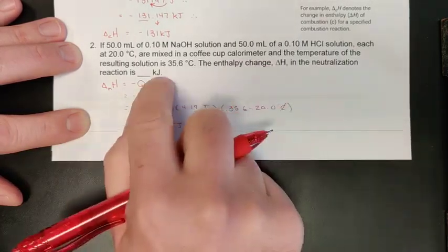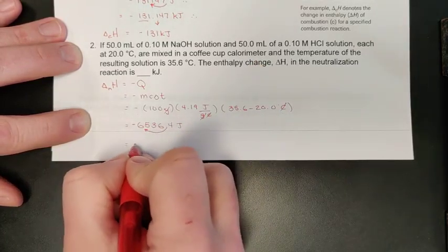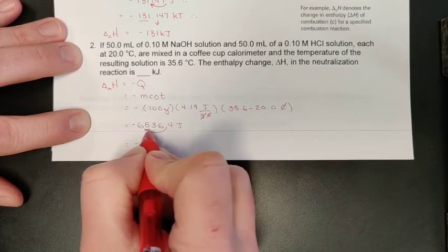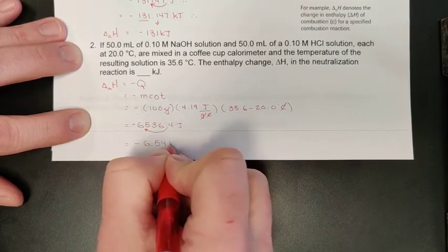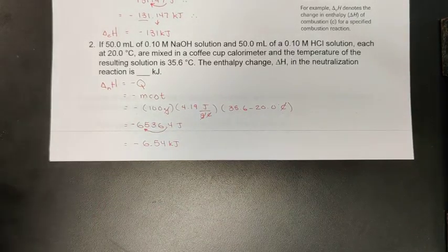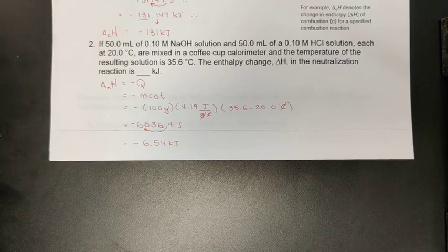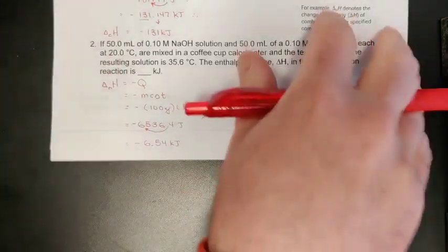Should put this into kilojoules, so again I'll move my decimal three spots because the kilojoule is that much bigger. I will do my rounding to three digits, and so the final answer here is 6.54 kilojoules. Hope that makes sense to you guys and this one is making sense to you.